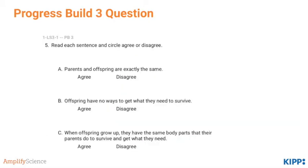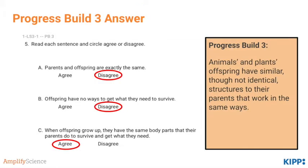And finally, this question assesses Progress Build 3 — pause and complete the question. Parents and offspring are not exactly the same, although they're very similar. They're usually different sizes and may have different fur patterns, slightly different colors, and slightly different behaviors. Offspring do have ways to get what they need to survive, such as being born with a hard shell to protect from predators or claws for digging. And C is agree, because it's important students understand that although parents and offspring aren't exactly the same, they do have the same body parts and the same basic features.